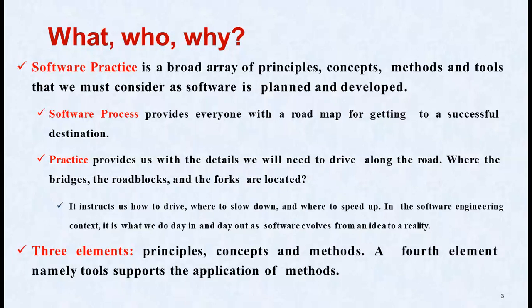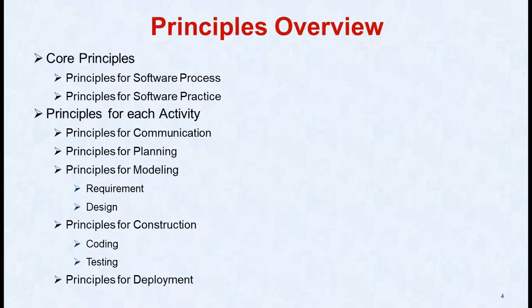In the software engineering context, it is what we do day-to-day as software evolves from an idea to a reality. There are three elements — principles, concepts, and methods — and a fourth element, namely tools to support the application of methods. In this chapter we discuss core principles: principles of software process and principles of software practice.